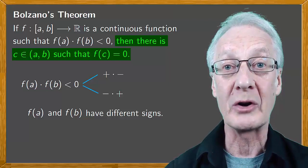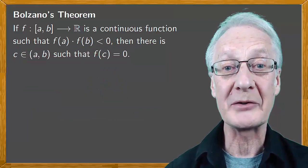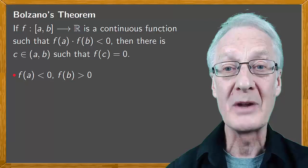It's easy to understand. There are two possibilities. Either f(a) < 0 and f(b) > 0, or f(a) > 0 and f(b) < 0.